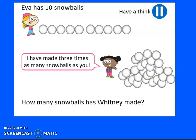Let's have a look at this question. Ava has 10 snowballs this time. Whitney says that she has 3 times as many snowballs as Ava. So we need to work out how many snowballs Whitney has. And as you can see, we can't really count them because they're all muddled up. So let's use our math skills to try and work this out. So what is 3 times more than 10? We can write that down as 3 times 10. What does that equal?